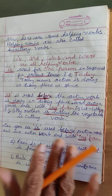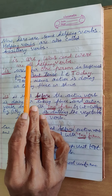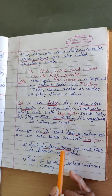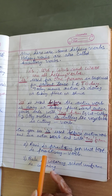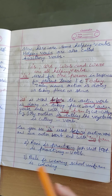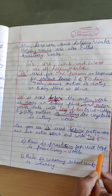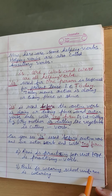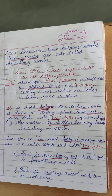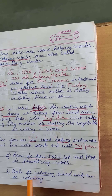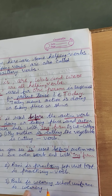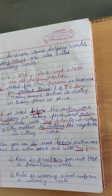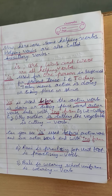And when more than one person is there, then 'are' will come. Rani is practicing for unit test. Here what is Rani doing? Rani is practicing for unit test. So 'is practicing' is a verb. Rani is wearing school uniform. Find out the action words. Is wearing is a verb. What is Rani doing? Rani is wearing school uniform.